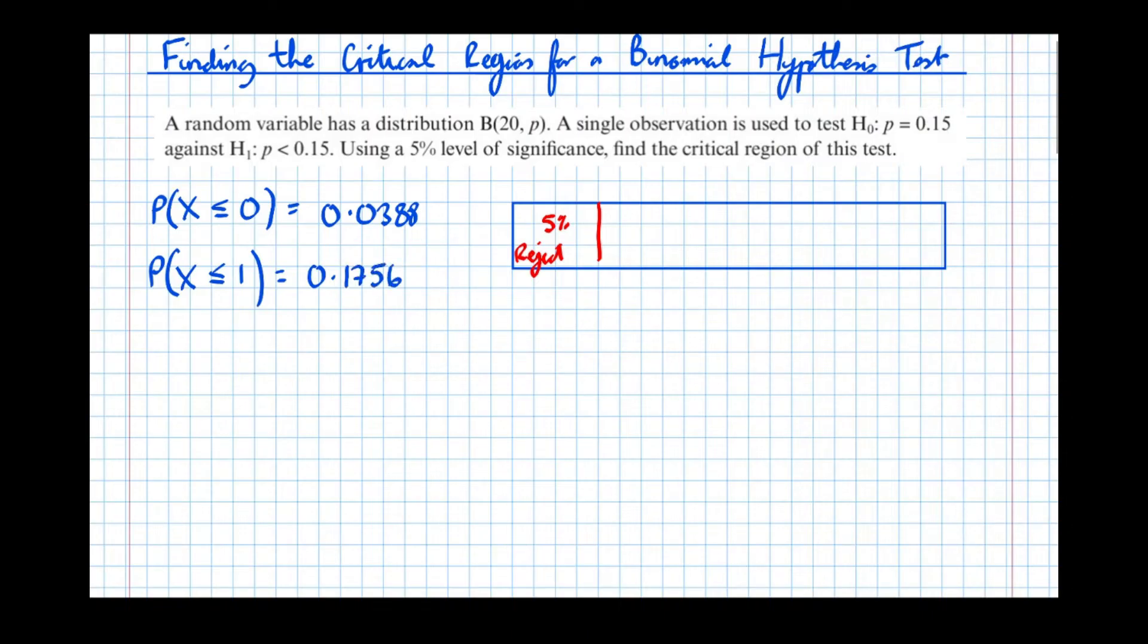And 0.1755 actually rounds to 0.1756. What we've shown there is that the region x less than or equal to 0 would lead to rejection. Then as soon as we get up to 1, less than or equal to 1, we move into acceptance. So if we observed 1, we'd accept. If we observed 0, we'd reject. So 3.88% of the probability lies to the left of 0. So in going from 0 to 1, we've crossed from reject to accept.